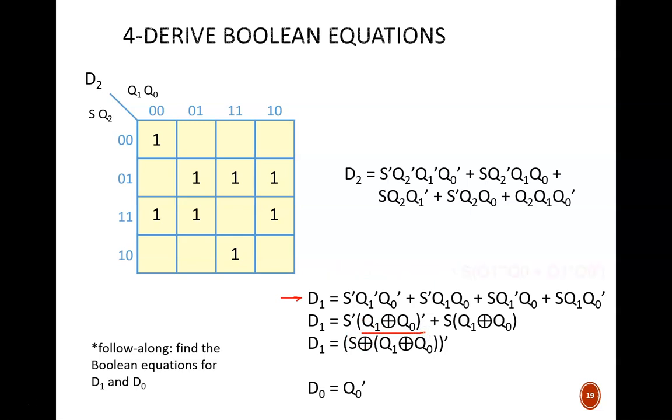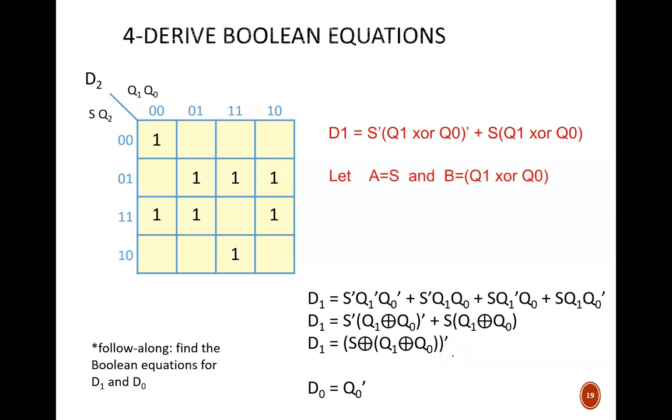In a similar fashion for the last two terms, factor out S and leave exclusive OR within the parentheses. To see this next step more clearly, let's do a little substitution. I'll give S the name A and Q1 exclusive OR Q0 the name B. Now we can see that this expression is just A exclusive NOR B. Subbing back in the original variables, this is the same as the exclusive NOR of S, Q1, and Q0.